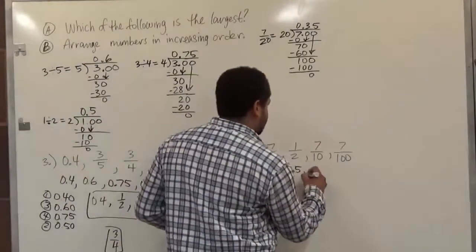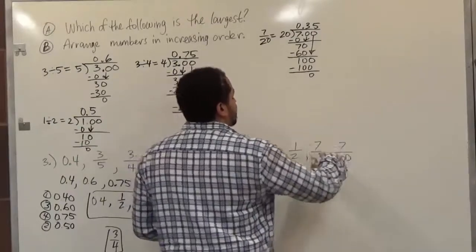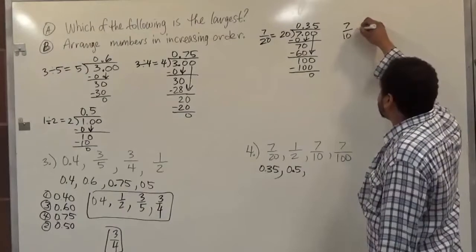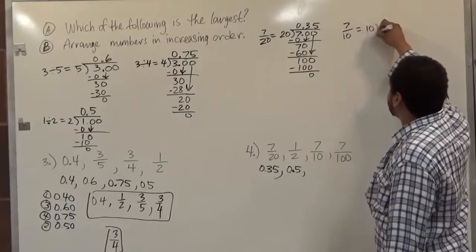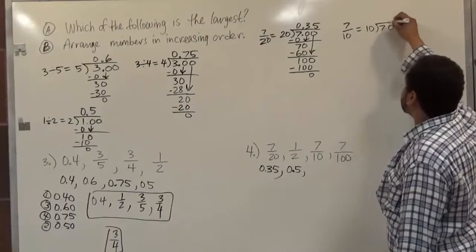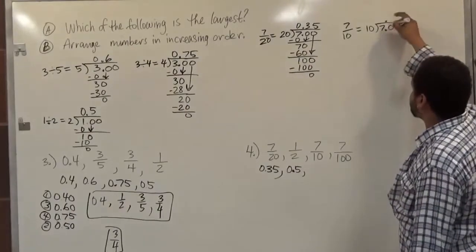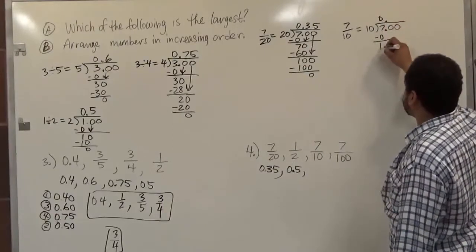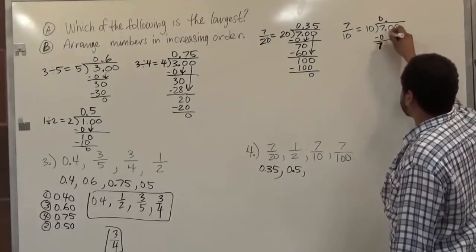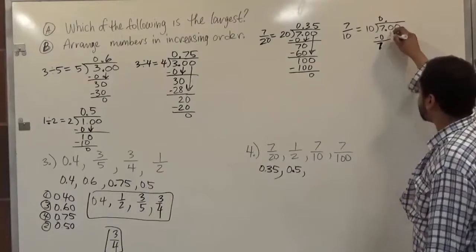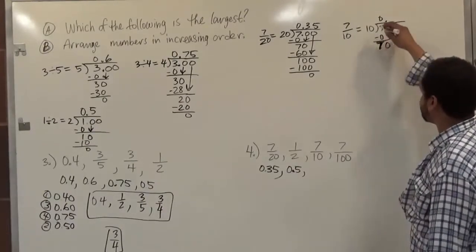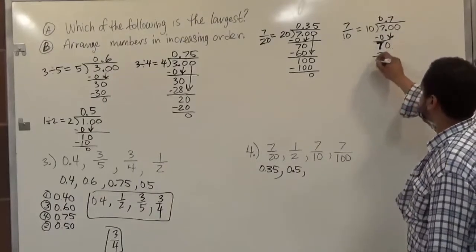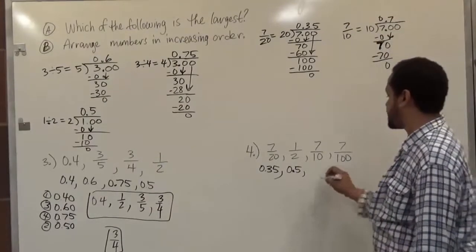The third term we have is 7 divided by 10. This is a common division. We take the bottom number and divide the top with it. We add two decimal places and bring the decimal up. 10 does not divide 7, so that's 0. Bring down the next 0 to get 70 divided by 10, which is exactly 7. So the decimal value terminates at 0.7.